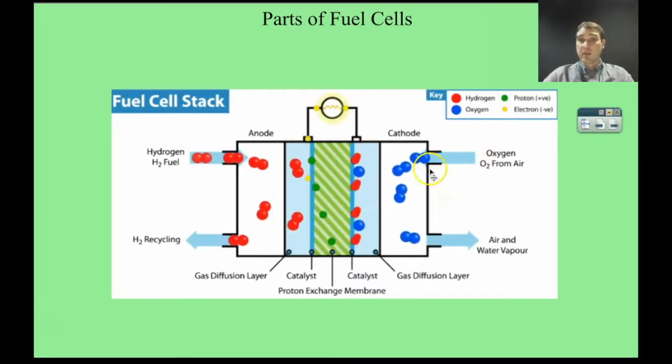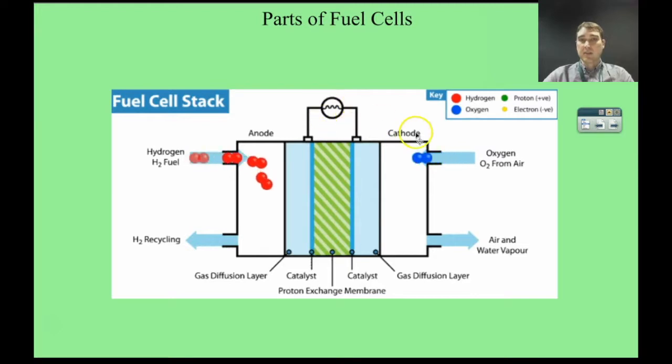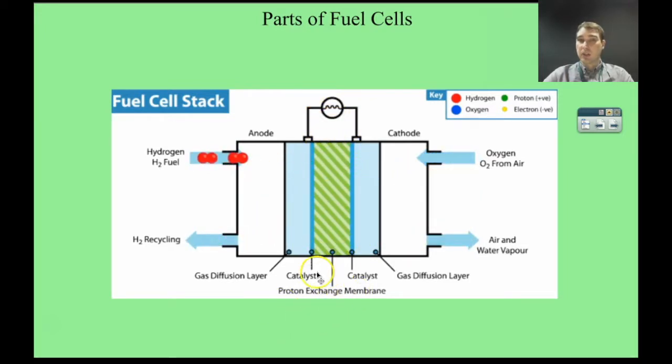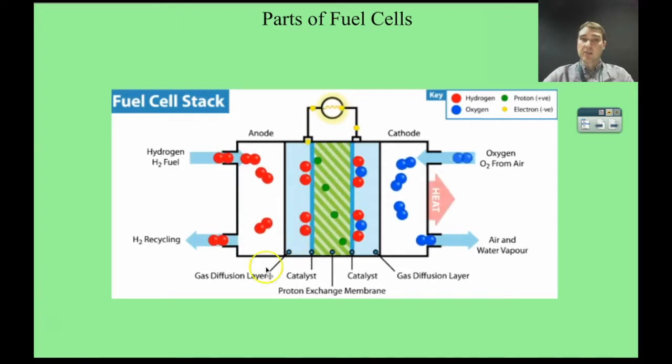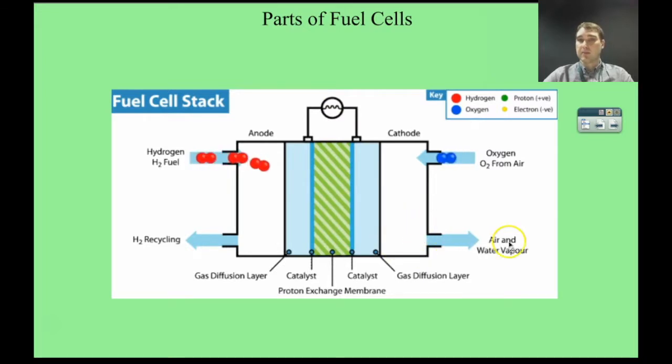On the cathode side we have oxygen coming in. That passes to the catalyst on the cathode side. The oxygen is reacting with the hydrogen ions passing through the electrolyte to produce water. We have our electrolyte in the middle and in this case it's a proton exchange membrane. You can have a variety of electrolytes depending on what type of fuel cell you're running. Hydrogen that isn't used can be recycled and the water produced can just be emitted.